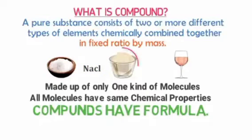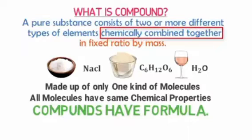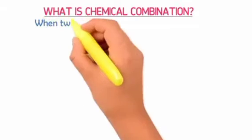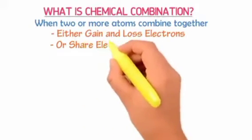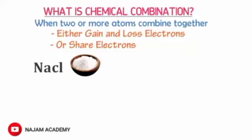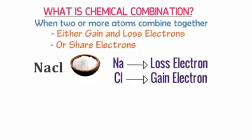For example, sugar has carbon, hydrogen, and oxygen. Water is H2O — hydrogen and oxygen chemically combined together. What is chemical combination? When two or more atoms combine together, they either gain or lose electrons, or they share electrons. For example, sodium and chlorine — sodium loses electrons while chlorine gains electrons.